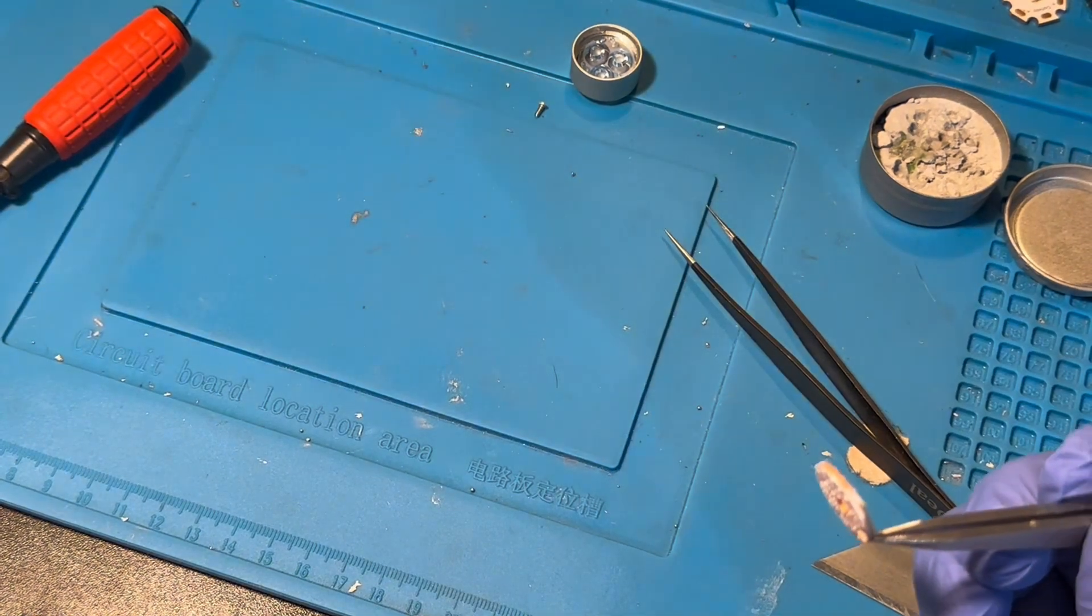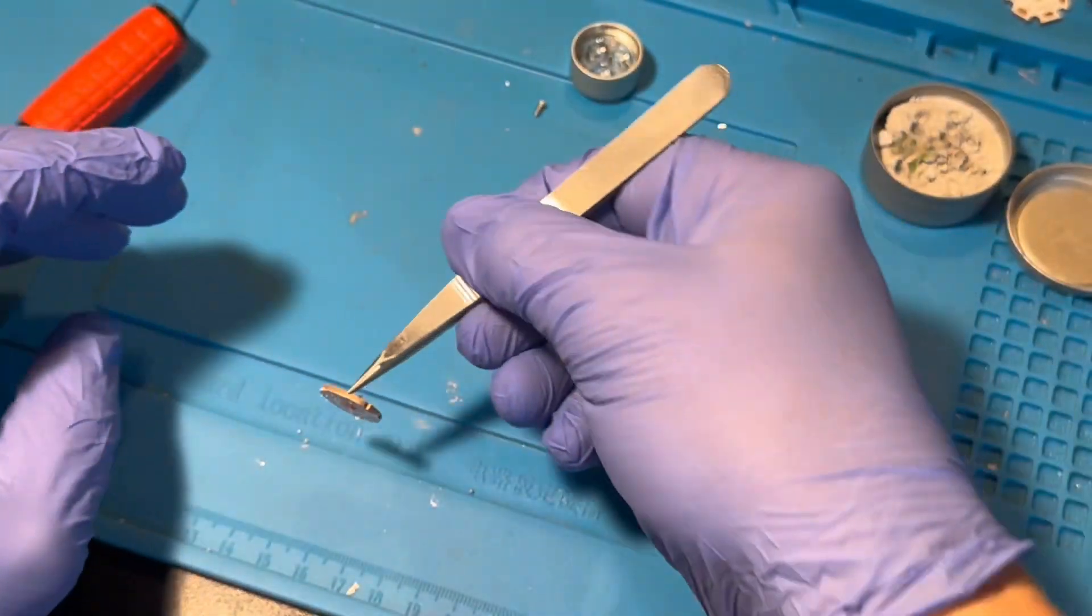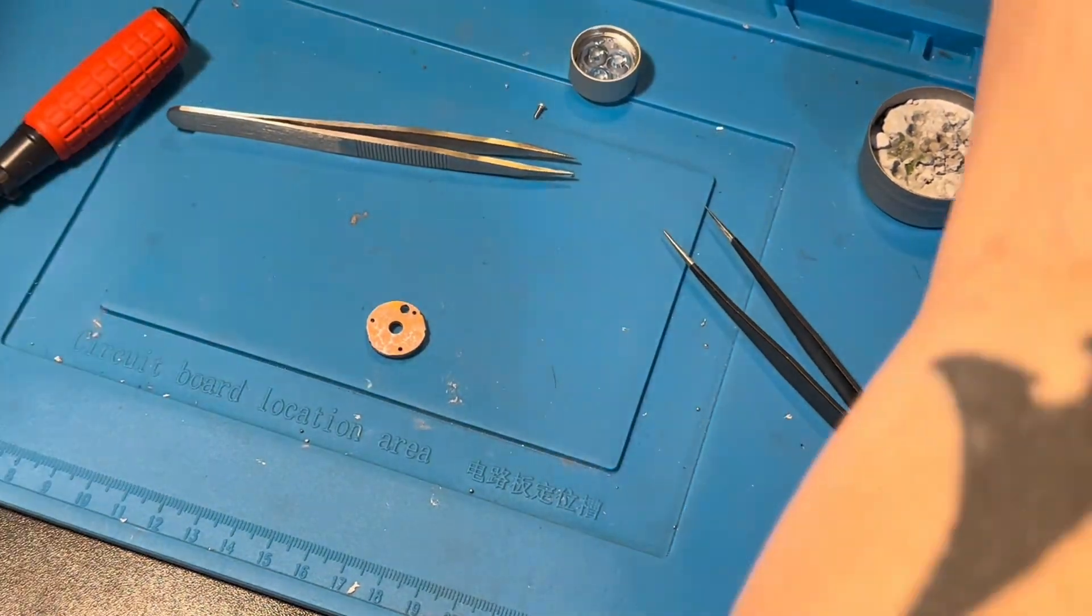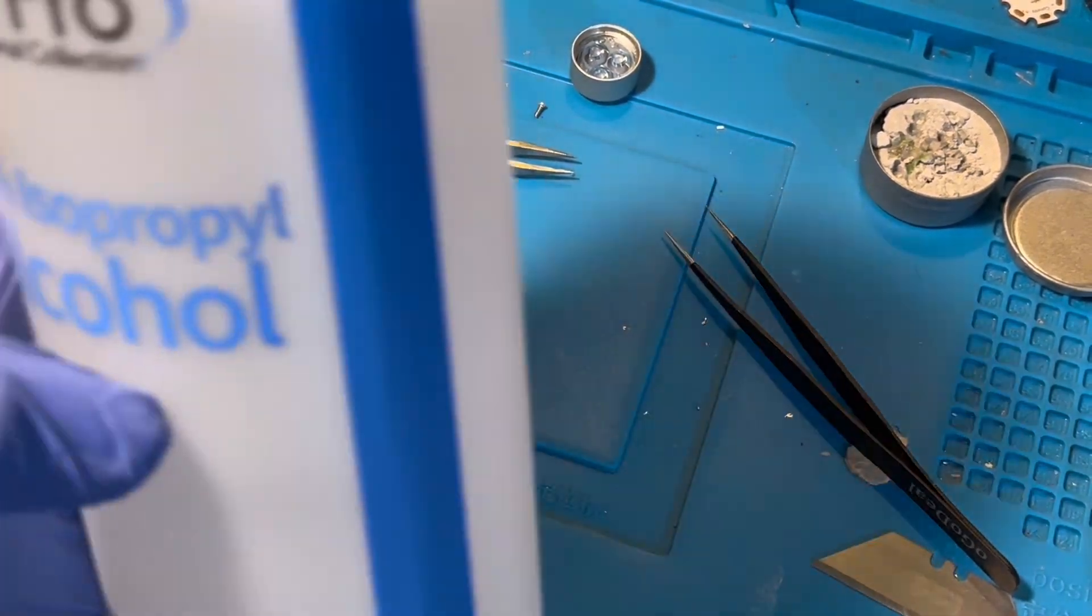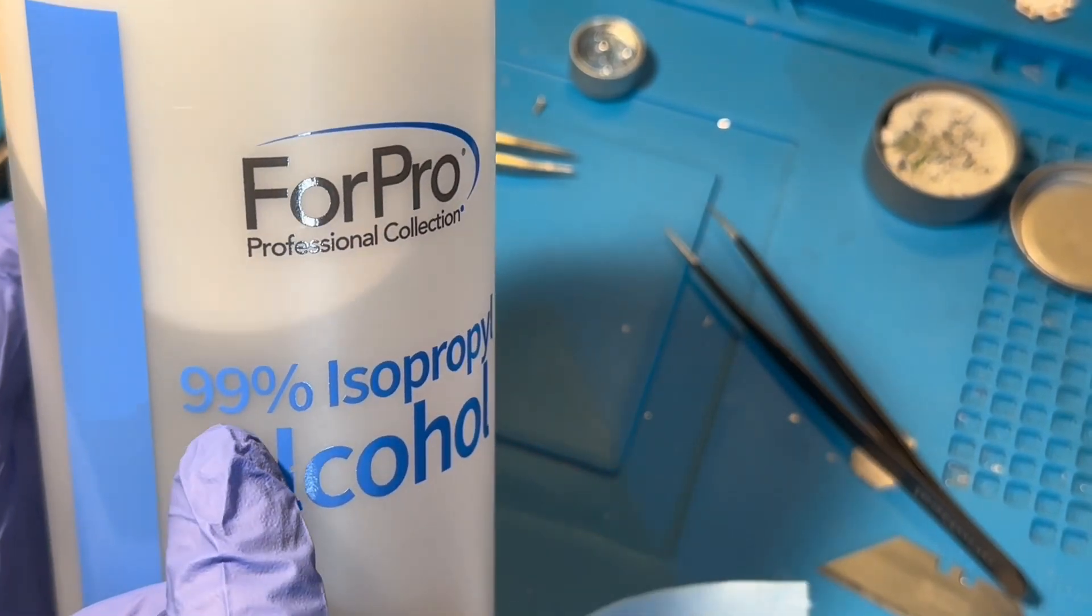So, now that I have the MCPCB off, I need to clean off the thermal paste that's on the back. I use the Scott blue paper towels, the shop towels. And then I use 99% isopropyl alcohol.